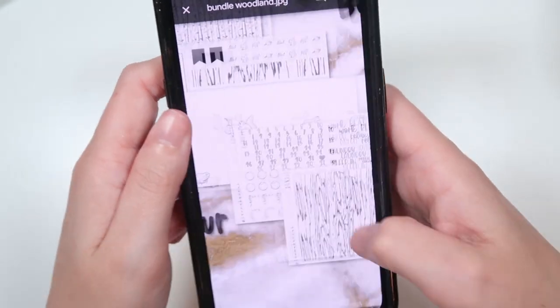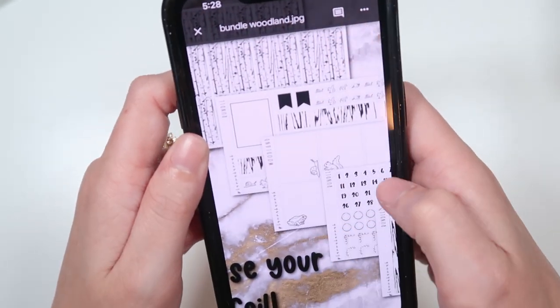And the last one we have is woodland which has the wood headers, the wood washi, woodland overlays and washi, and then the birch underlays.